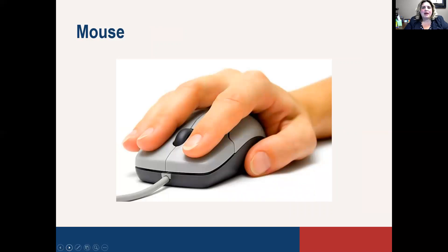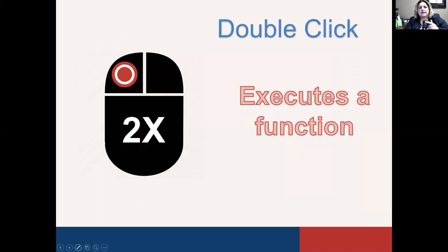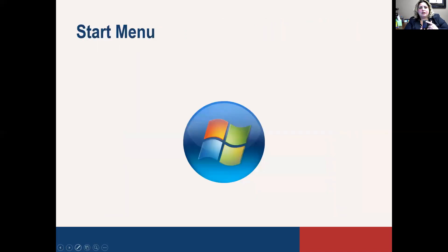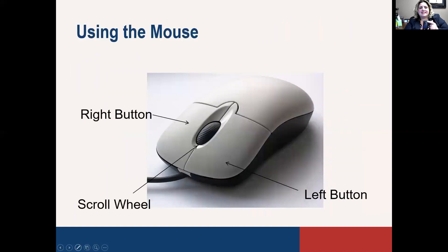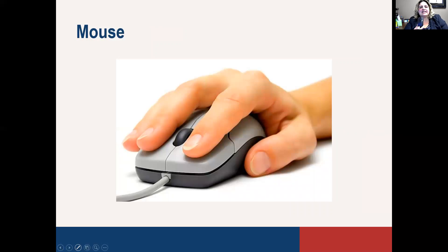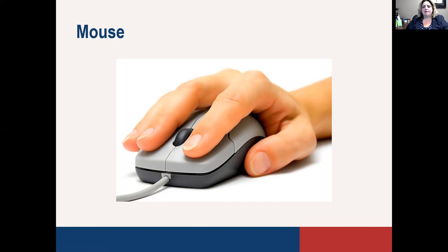Now we get to the mouse. The mouse is not one of those critters that might be in your house — it looks like the picture shown. It has a little scroll wheel in the middle, and you place two fingers on it with your thumb to the side. When sitting at your desk, that's how you would hold the mouse, and that placement is important so that you're able to guide and maneuver it.